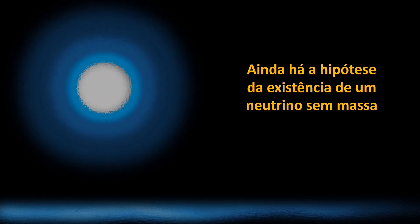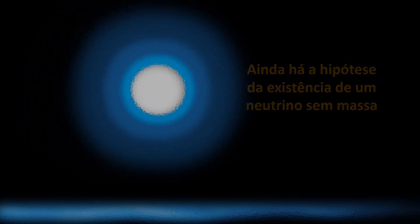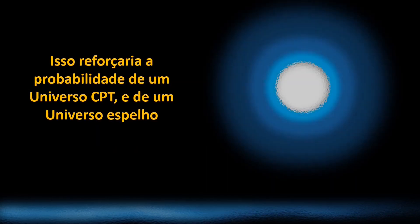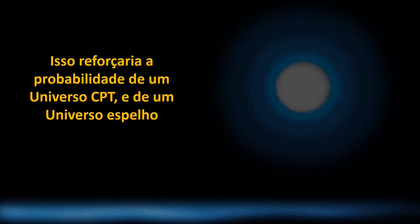Além disso, eles preveem que uma das espécies de neutrinos não deve ter massa. Atualmente, os físicos só podem colocar limites superiores nas massas dos neutrinos. Se os físicos puderem medir conclusivamente as massas dos neutrinos, e um desses neutrinos realmente não tiver massa, isso reforçaria muito a ideia de um universo CPT simétrico.